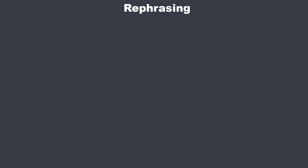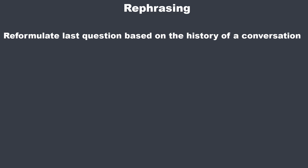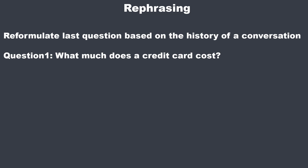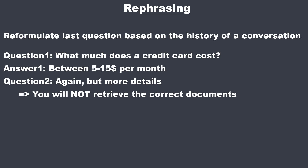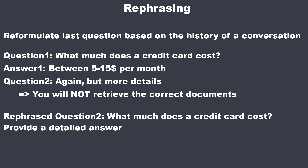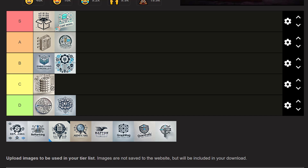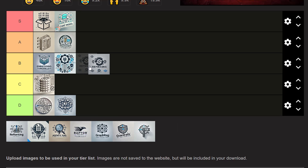The next technique is rephrasing. Rephrasing a user query based on the conversation history is absolutely crucial. If a user's follow-up question is just 'again, please,' embedding that query will retrieve completely wrong documents. That's why you take the complete history, look at the newest question, and rephrase it based on the history to retrieve relevant documents. You 100% need it in a RAG chatbot, but not at all without RAG. Since we focus on RAG, I'd put rephrasing in B tier.